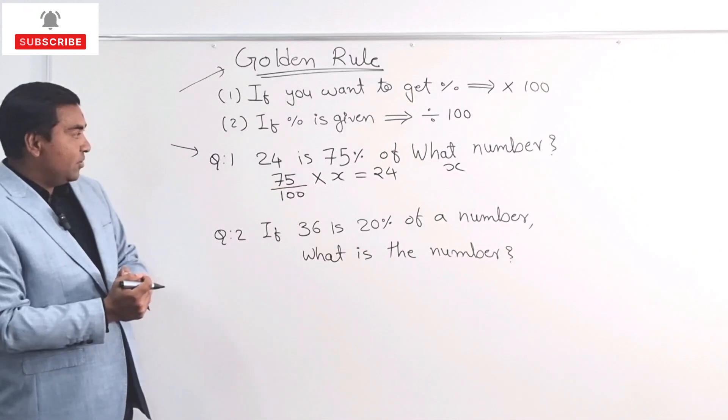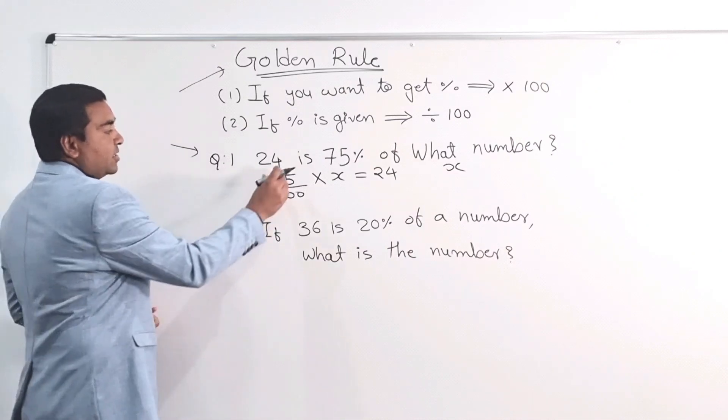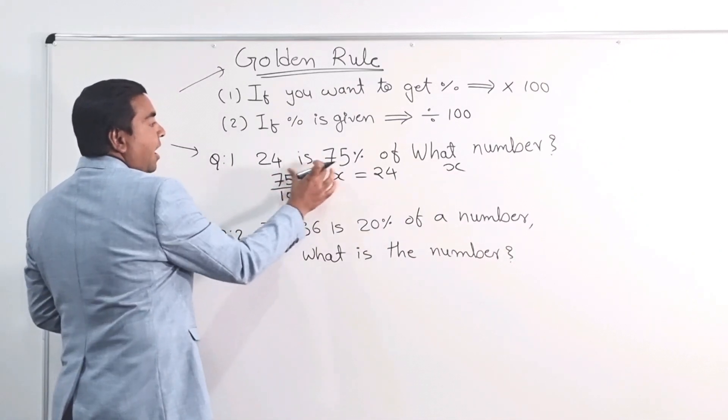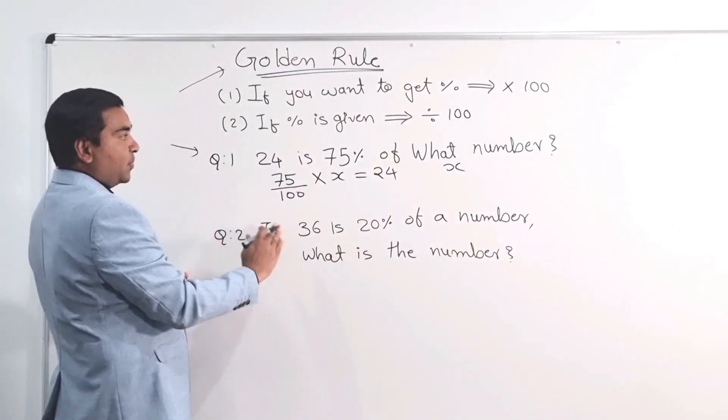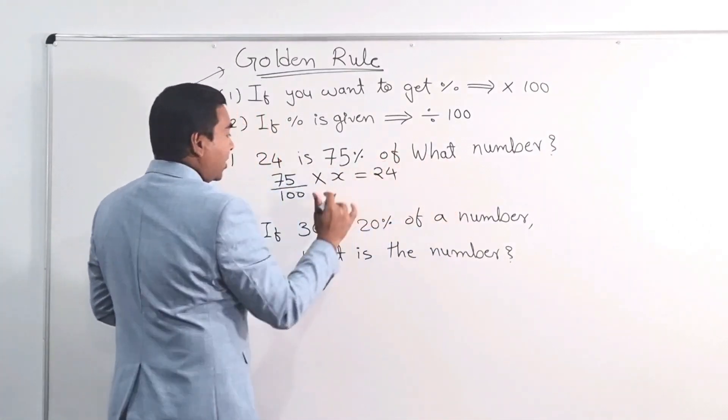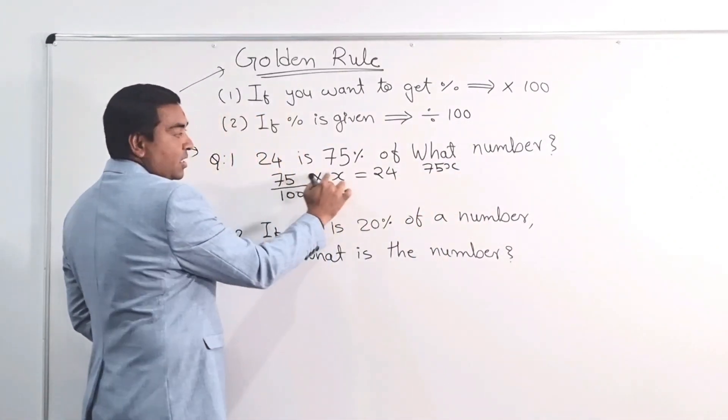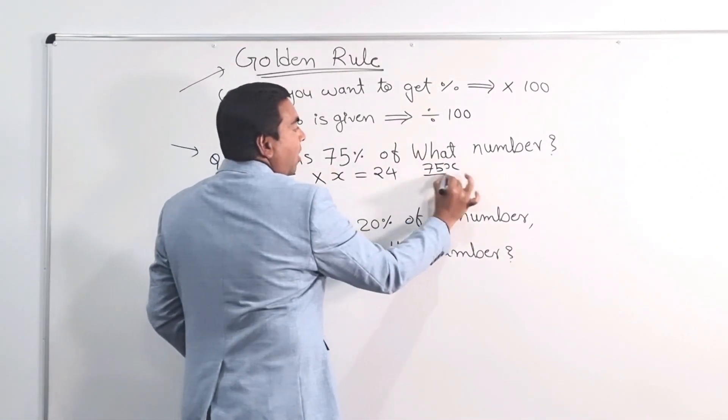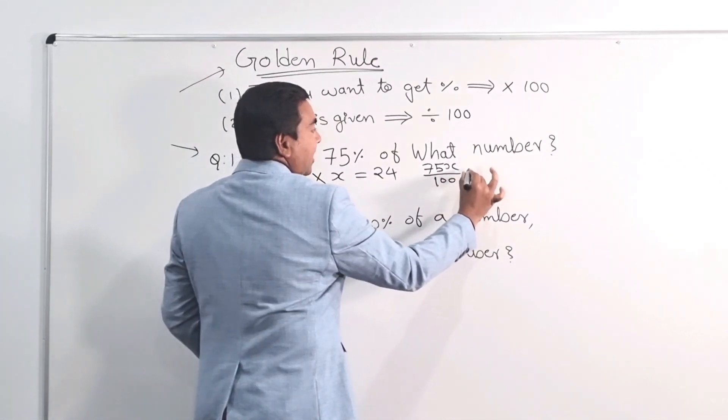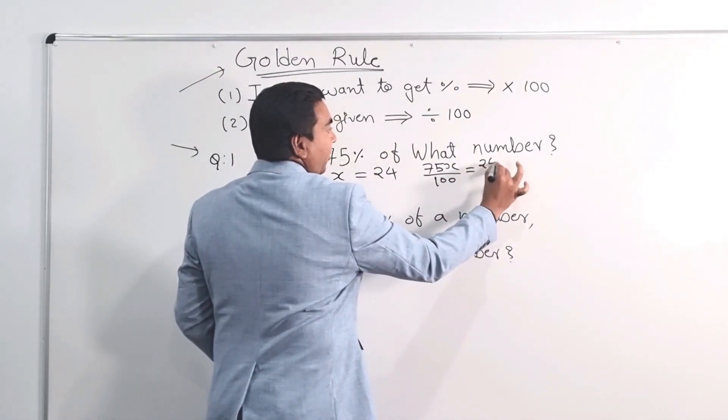And now, what we need to do is, so this 75X, they are in multiplication. So I don't have space here. So I'm going to work out here. So let's say 75X because they are in multiplication. And then over 100 and that is equal to 24.